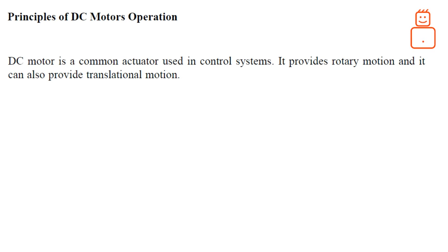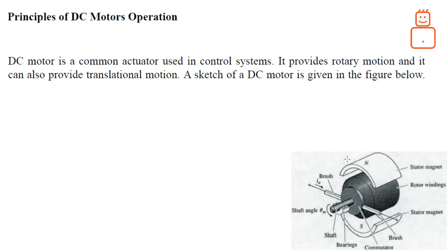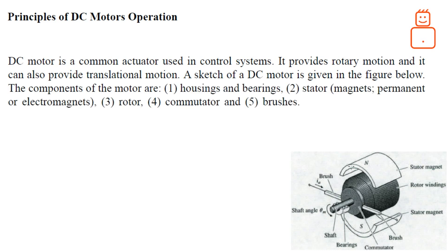DC motors are very common devices or actuators used in different types of control systems. They can provide rotational and translational motion. A simple sketch of a DC motor is shown here. The DC motor usually consists of a housing and bearings, and there is a stator. This stator could be a permanent magnet or electromagnetically actuated.